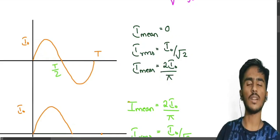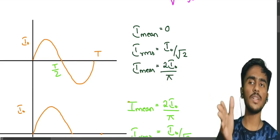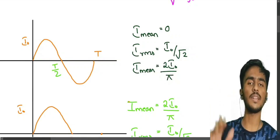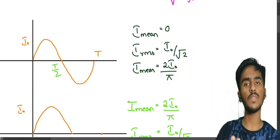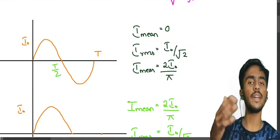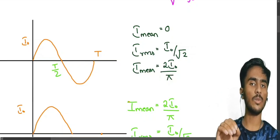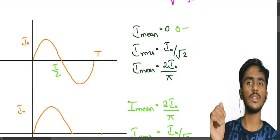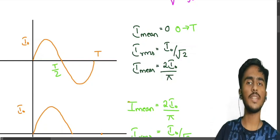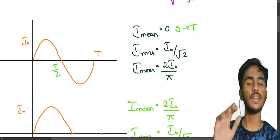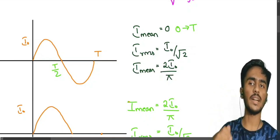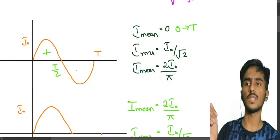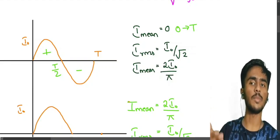Whether you integrate from 0 to T by 2 or from 0 to T, the RMS value is the same: I0 divided by root 2. Here, I0 is the peak current — the maximum value of the current. For I mean over the full cycle (0 to T), the value is 0. But if you take only the positive half-cycle, from 0 to T by 2, the mean value is 2I0 divided by pi.